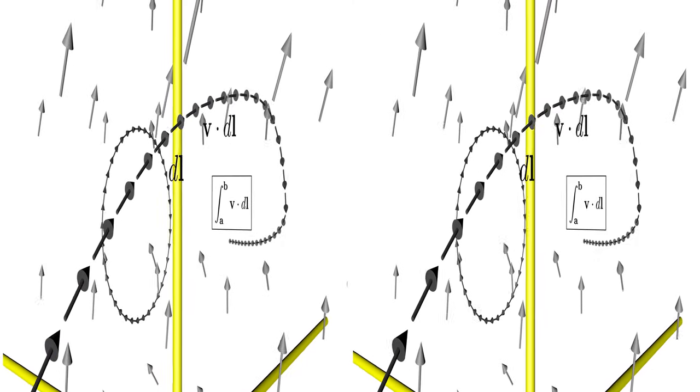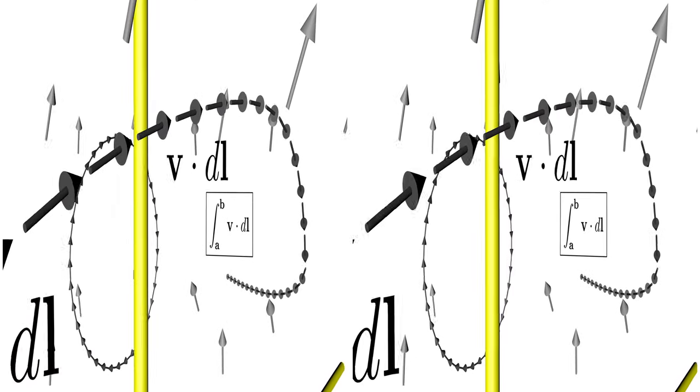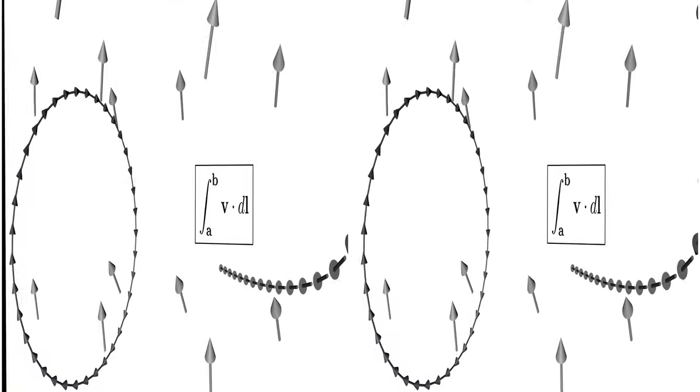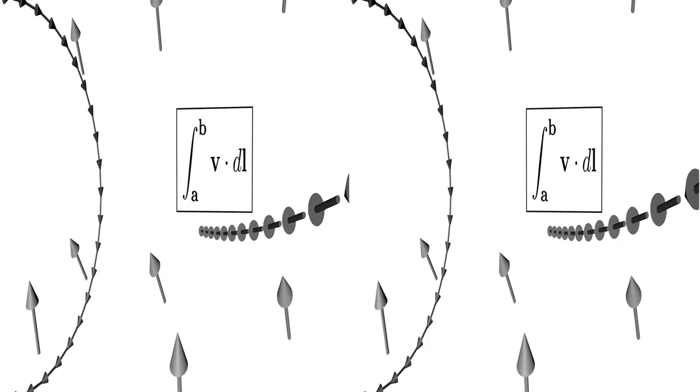If you would travel through a vector field from point A to B, you could sum all the contributions from the vector field along this path. This is called a line integral.